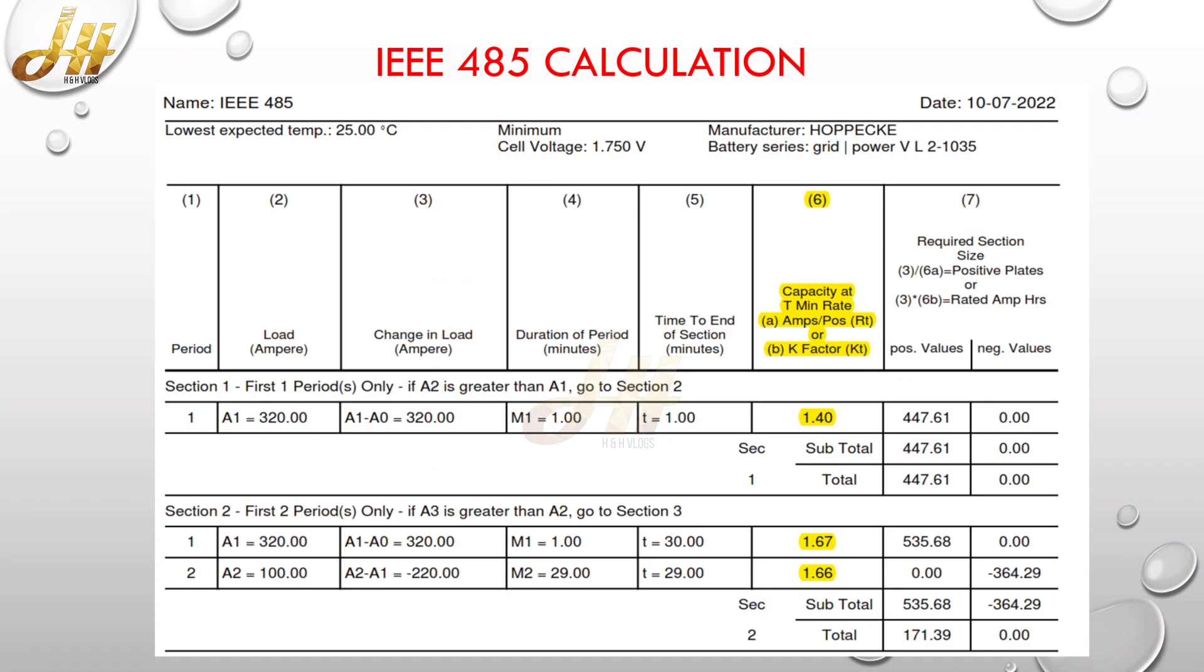Now you are seeing IEEE 485 calculation which is being generated from a manufacturer software. Once we feed the details such as load, its duration, and the parameters we explained earlier, today I am not going to describe the whole process of IEEE sizing, but here today I am only focusing on the KT factor values.